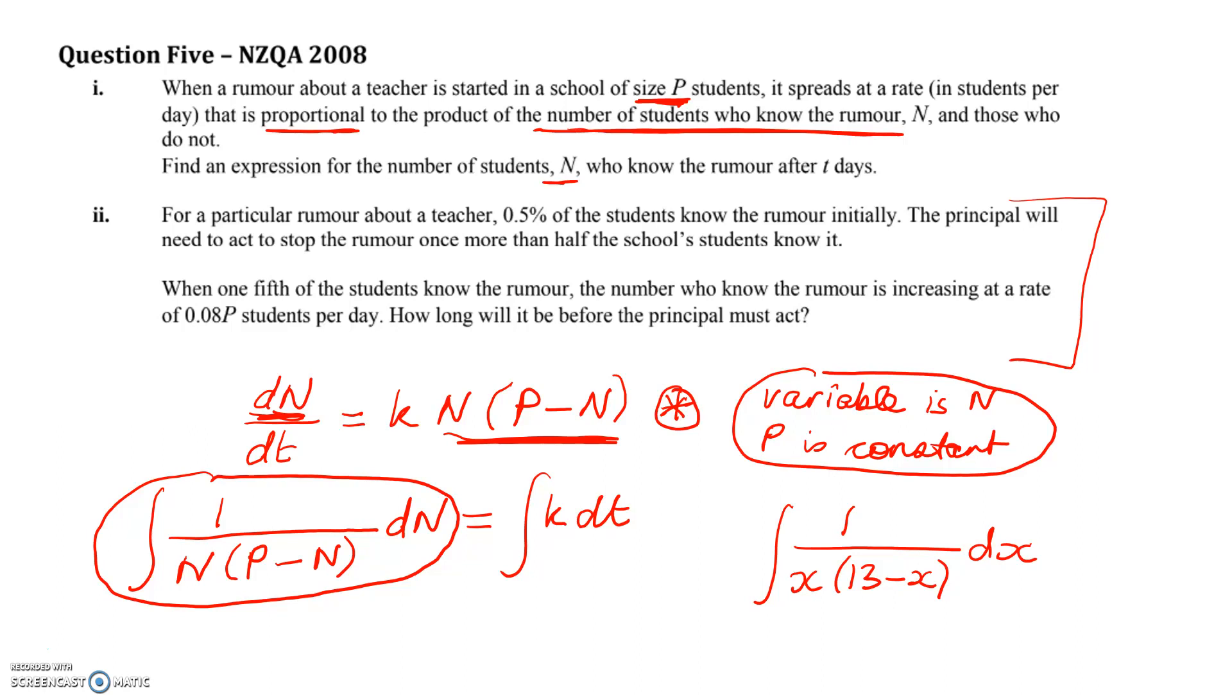What we've got on the screen is left over from the previous video. We started out with this differential equation, and from there we got an expression for the number of students N who know the rumour after t days.